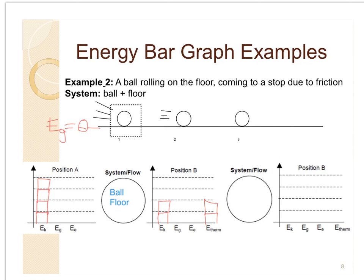Finally, at position C, the ball has come to a complete stop, so there's no kinetic energy. The ball is still on ground level, so there's no gravitational energy, and there's still no spring, so no elastic energy. Therefore, all the energy the ball originally possessed must now be stored as thermal energy in the ball and the floor.